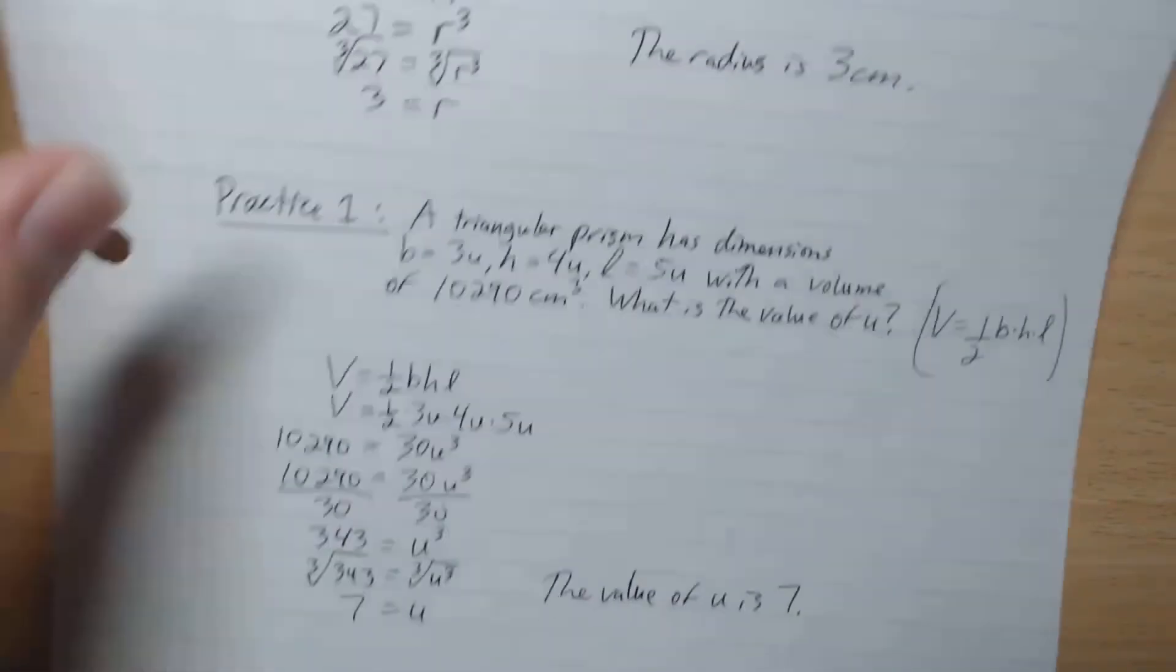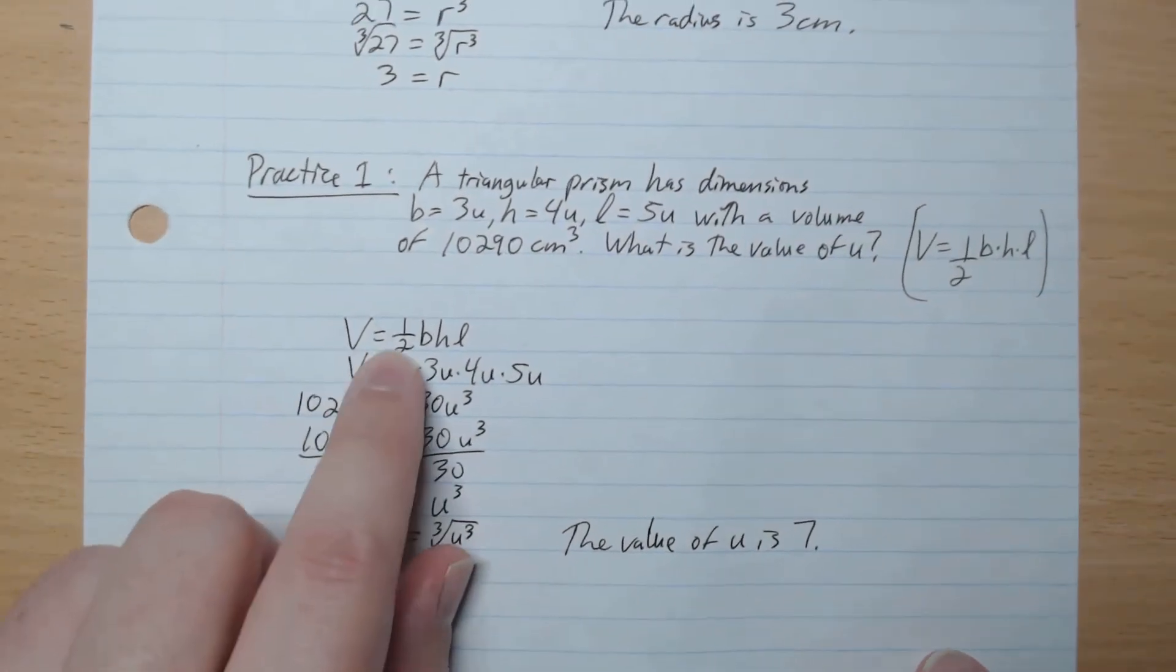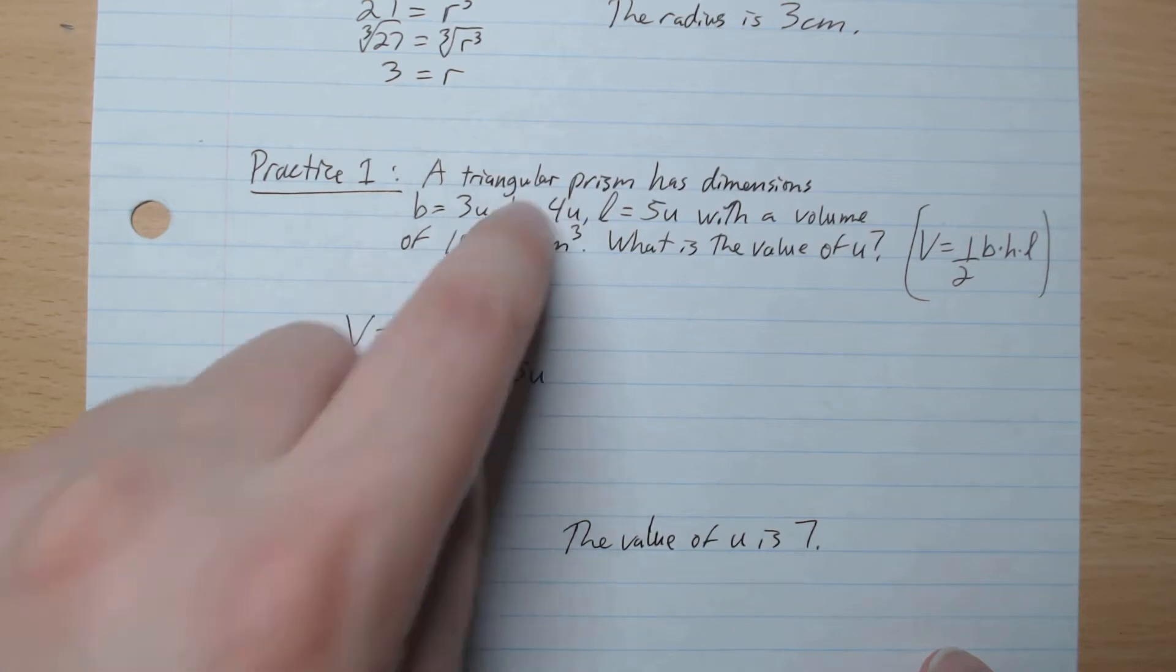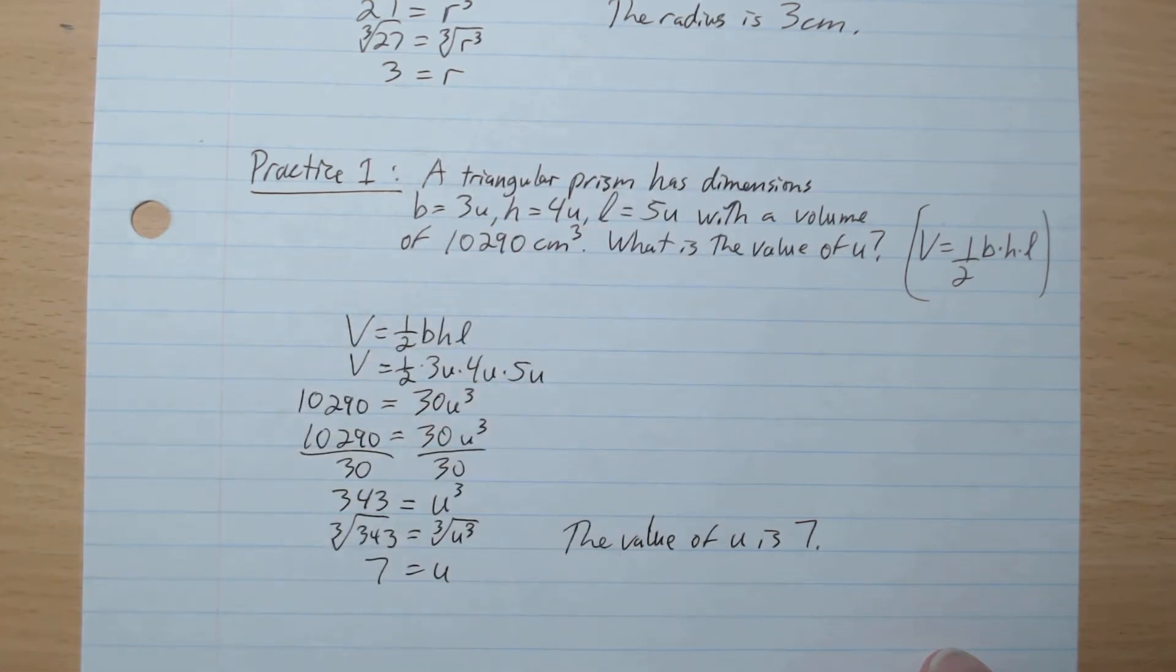Okay, we're back. So what do we have? V equals half bhL. bhL, plugged in like that, which gives 30u³.